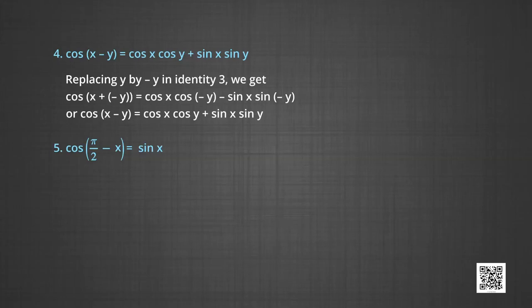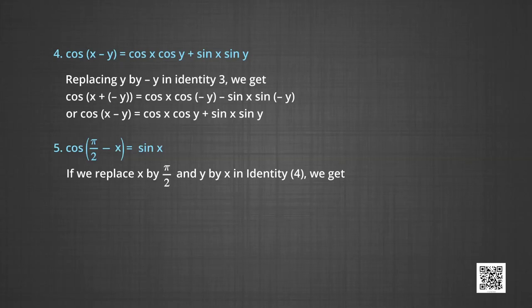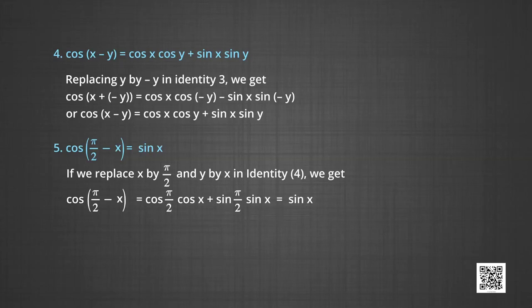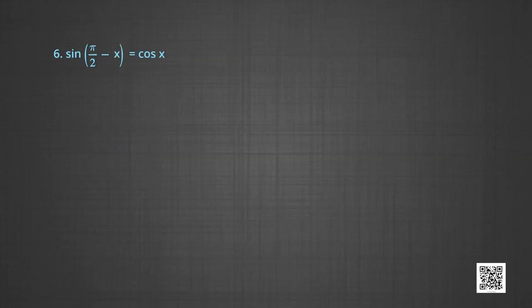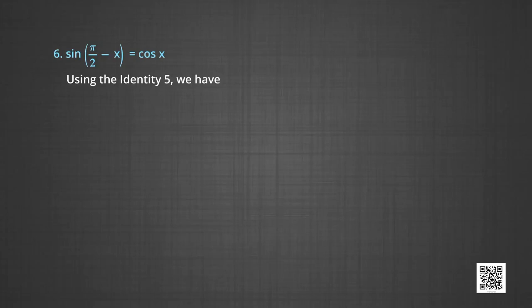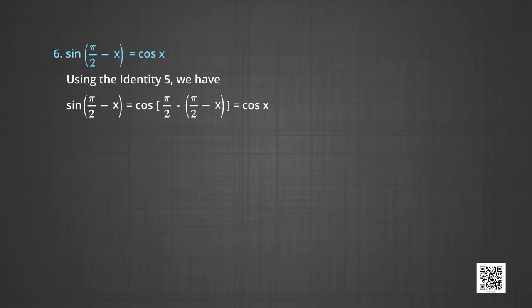Next, let us see how cos(π/2 - x) = sin x. We replace x by π/2 and y by x in the identity cos(x-y). We get cos(π/2 - x) = cos(π/2)cos x + sin(π/2)sin x. Since cos(π/2) = 0 and sin(π/2) = 1, cos(π/2 - x) = sin x. For the sixth identity, sin(π/2 - x) = cos x, which follows by applying the previous result to sin(π/2 - x) = cos(π/2 - (π/2 - x)) = cos x.